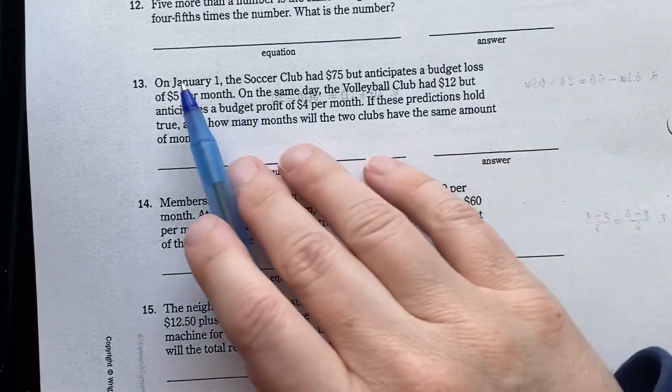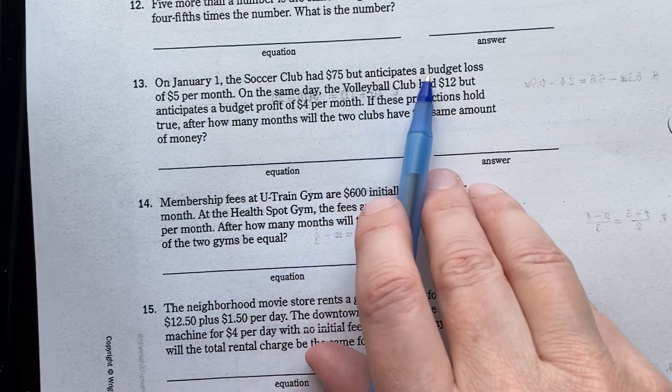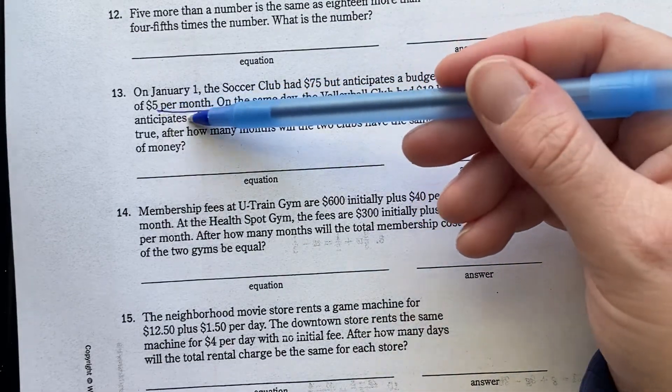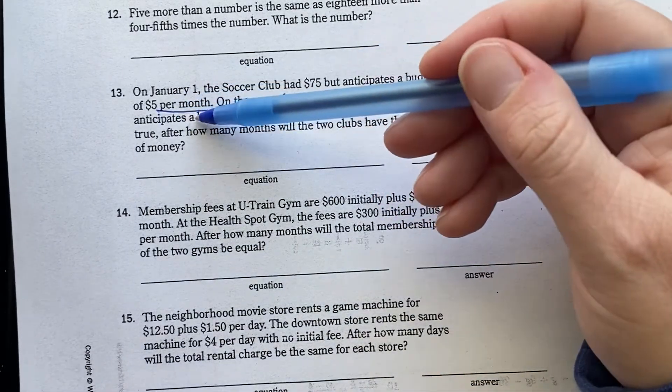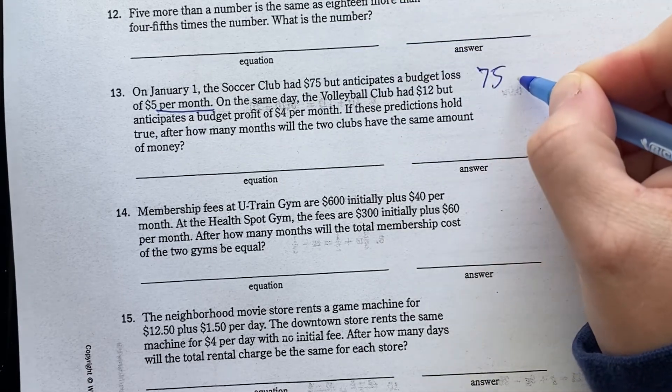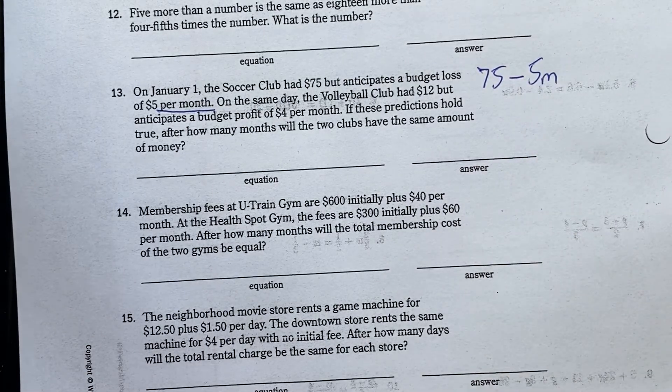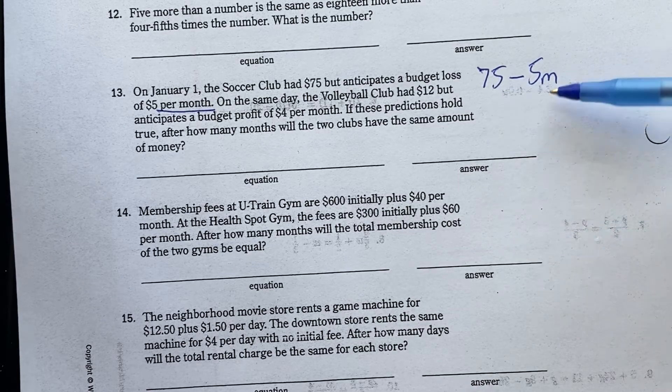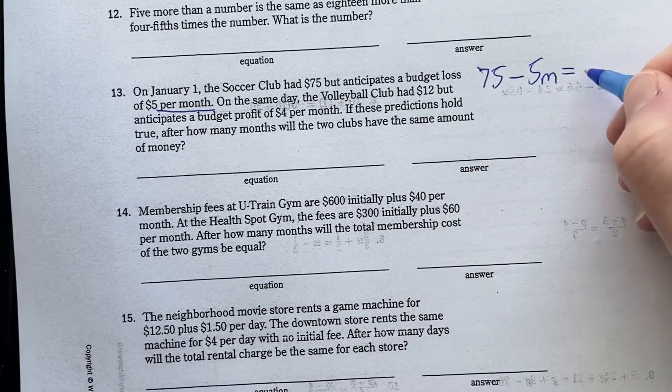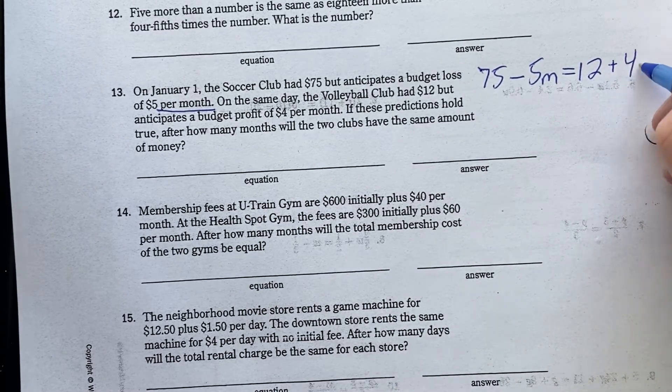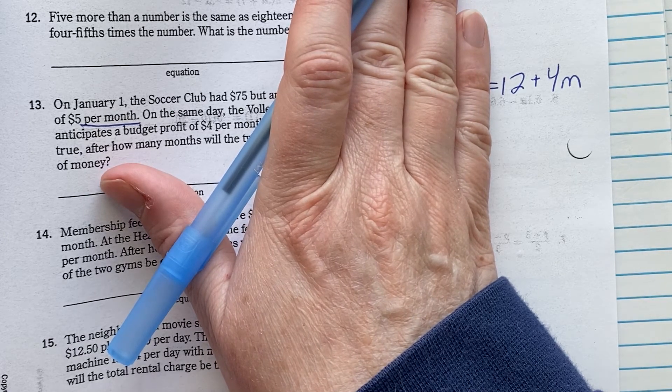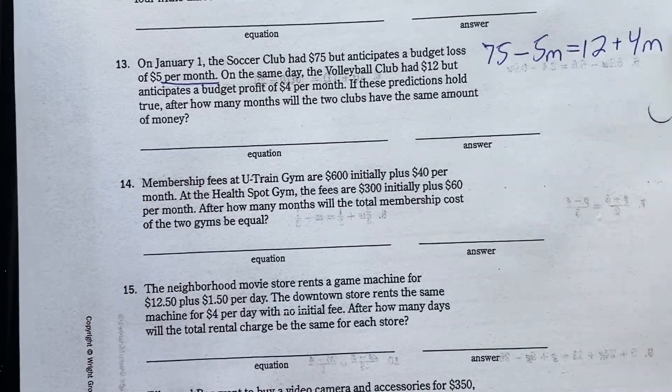Let's do the soccer clubs. On January 1st, the soccer club had $75, but anticipates a budget loss of $5 per month. That's going to be important. On the same day, the volleyball club had $12, but anticipates a budget profit of $4 per month. If these predictions hold true after how many months will two clubs have the same amount? So, to figure out how much money soccer club has, they start with $75, but each month they're losing this much money. So, month one, they have $70, month two, they have $65. I'm multiplying and then subtracting. We want to know when they have the same amount of money. So, the volleyball club has $12, but is making $4 per month. So, in month one, they'd have $16. In month two, they'd make $8, so that would give them a total of $20. So, the idea here is, when are they going to be equal?